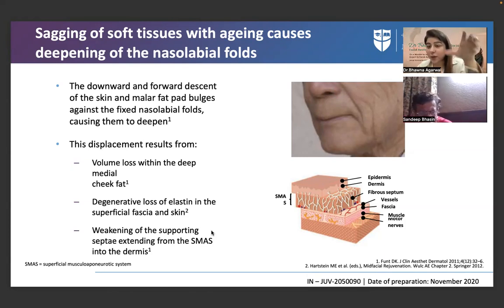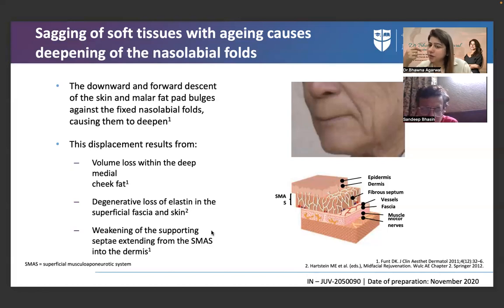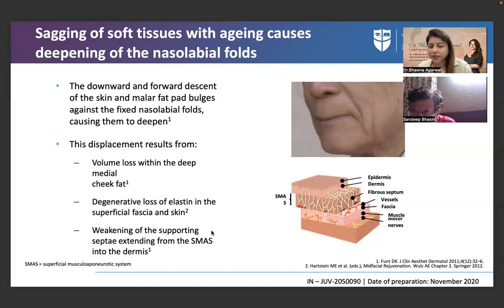For volume loss in the deep fat pad, we give bolus injections. Regarding weakening of the supporting septa from SMAS to dermis, we can't do much about that directly. So when giving fillers, we must also work on the skin — giving PRP or boosters should be part of the protocol.